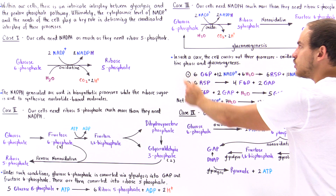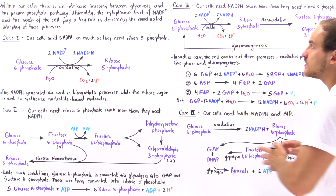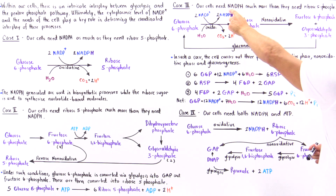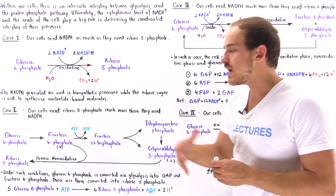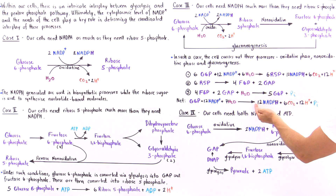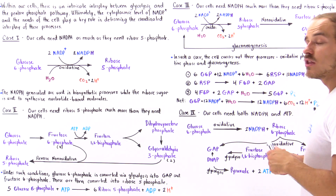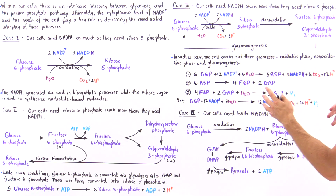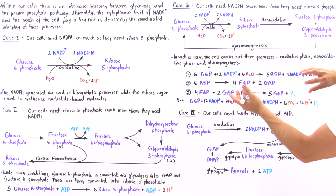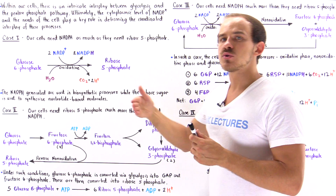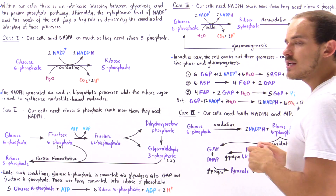Notice that in the net reaction only a single glucose-6-phosphate appears on the reactant side and none appear on the product side. This tells us that in cells such as fat cells — which need NADPH much more than ribose sugar — the glucose-6-phosphate is metabolized to form 12 NADPH molecules, along with carbon dioxide, orthophosphate, and 12 H+ ions. These cells don't need the ribose; they only need the NADPH, so this coordinated interplay between the pentose phosphate pathway and glycolysis maximizes NADPH production.